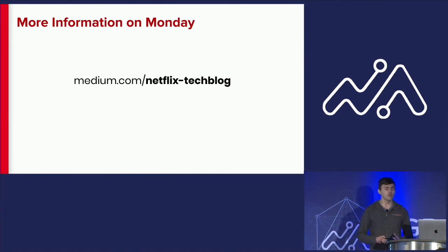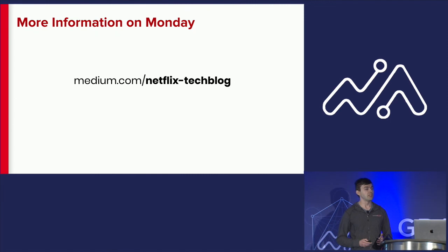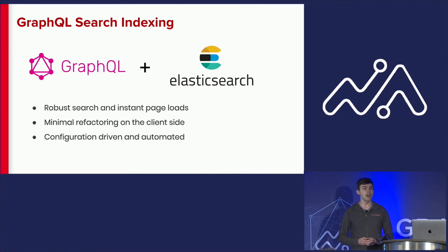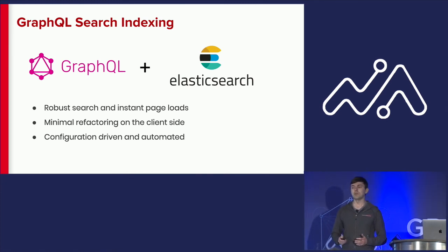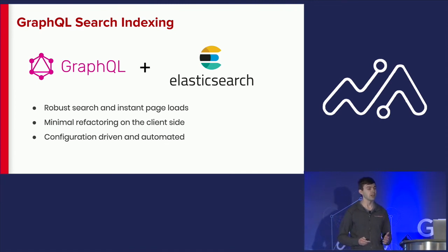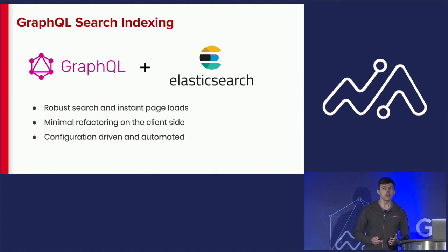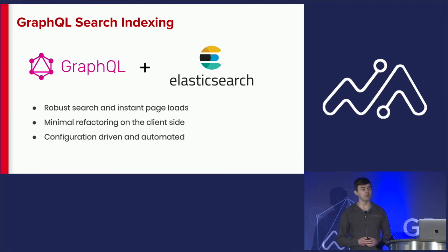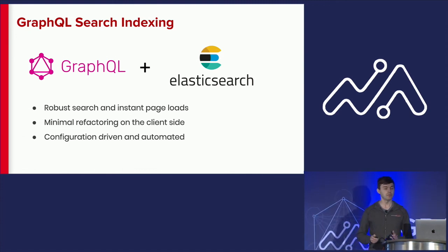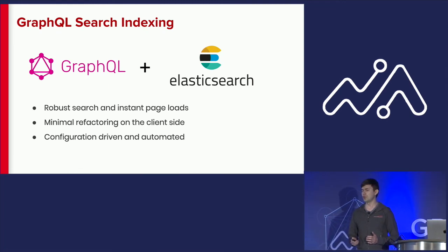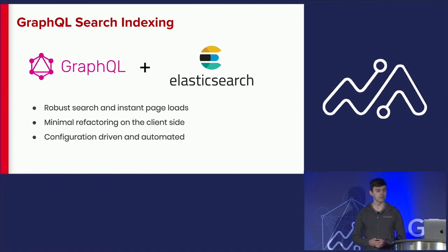If you want to learn more, I'm writing a post next week on the Netflix tech blog with significantly more technical details. In conclusion, after adopting GraphQL to build and maintain our search index, we have been able to provide our users with robust search functionality and faster page loads. We didn't have to do too much refactoring on the client side, because the data came back in the exact same shape. And best of all, this was all driven by configuration — we didn't have to write any custom code.